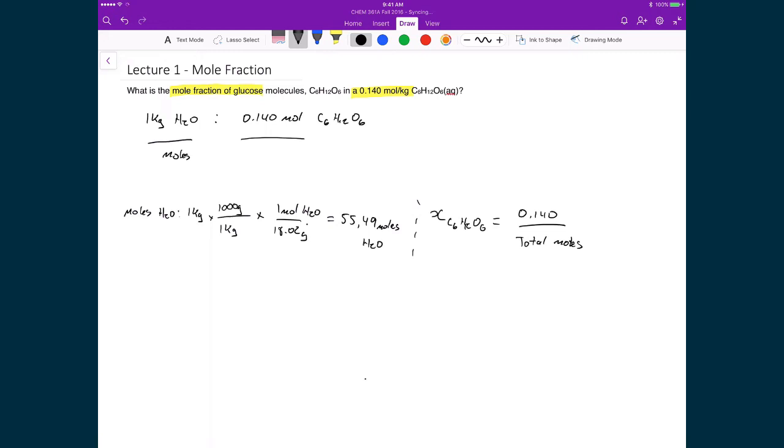So now we know, or now we can easily calculate the total number of moles. The mole fraction of C6H12O6 in our solution: we still have 0.14 moles on top. And on the bottom, what we have is 55.49 plus 0.140. So again, we have the total number of moles of the water, and the total number of moles of the glucose. So this is total moles on the bottom. And on top we have the number of moles of glucose, because we're trying to find the mole fraction of glucose in the total solution.